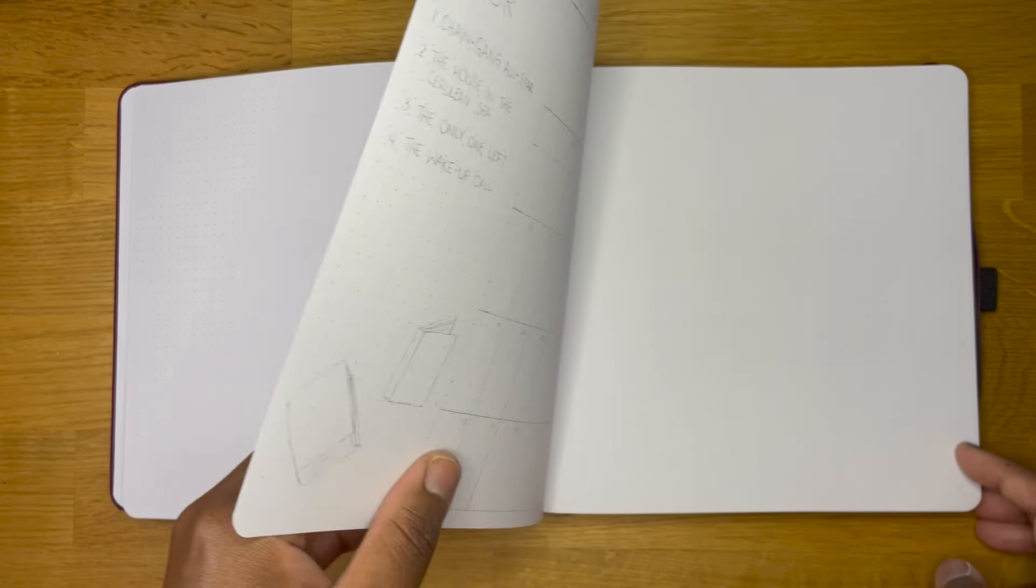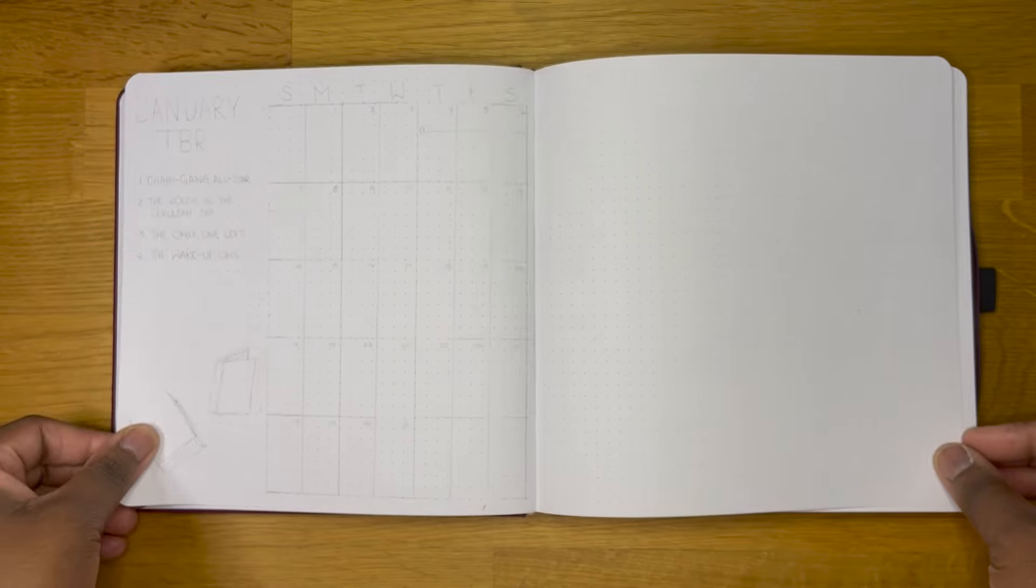Next we are going to skip the next six pages. I'm going to leave these blank just in case I find any other challenges that I want to do throughout the year, any type of readathons, anything like that. I have space in my journal for that. We are going to set up the last spread for today, which is going to be my January spread.